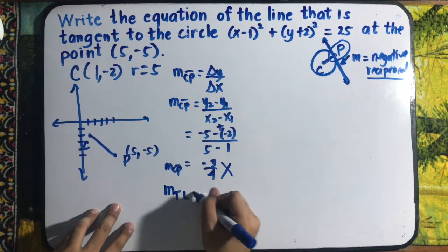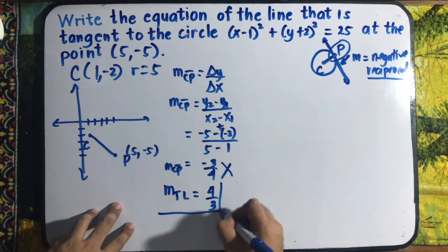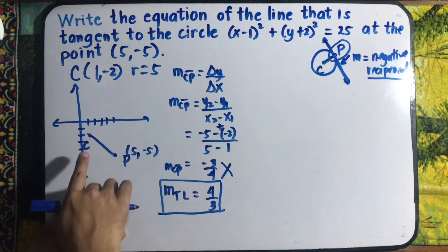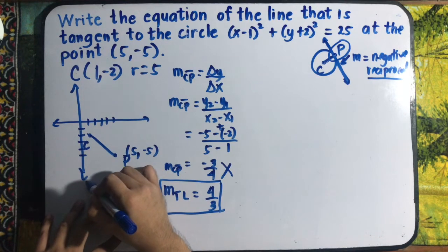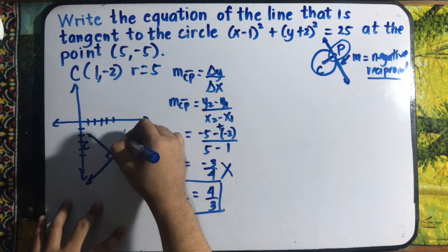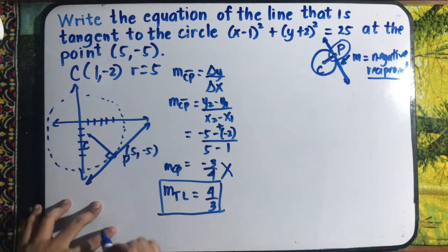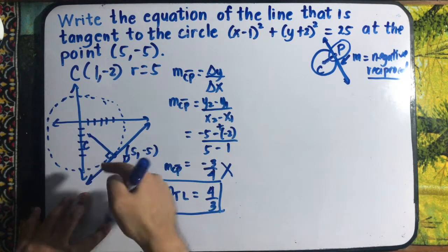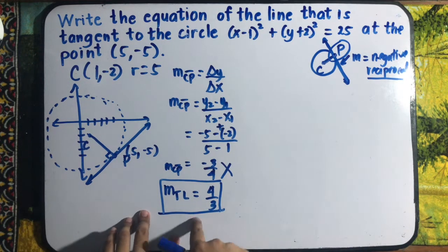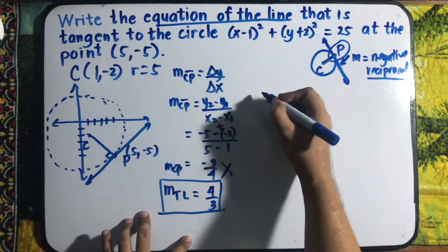The slope of the tangent line is the negative reciprocal of the slope of CP. Since the slope of CP is negative 3/4, its negative reciprocal is positive 4/3. The tangent line is perpendicular to line segment CP, and perpendicular lines have slopes that are negative reciprocals of each other. So the slope of the tangent line is 4/3.